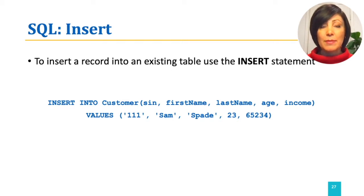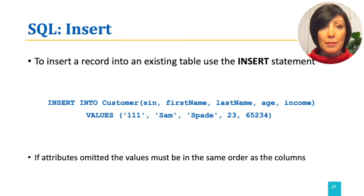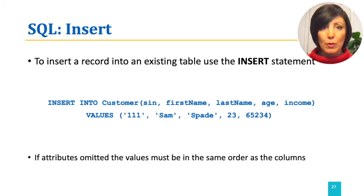In some database management systems, we can optionally omit the list of the attributes and only list the values in the same order as the table columns are declared in the schema. However, it is recommended practice to keep the list of the attributes explicit when making an INSERT INTO the table.